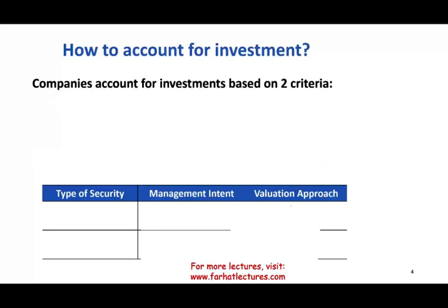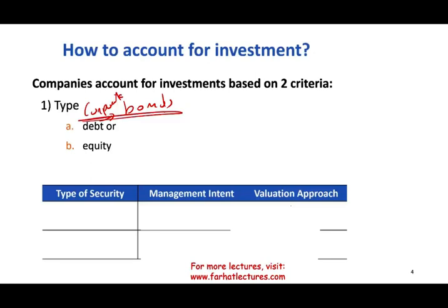How to account for investments depends on two basic criteria. First, the type of the investment you are dealing with — the type could be debt or it could be equity. When we discuss debt in this series of lectures, I'm going to be referring to bonds, specifically corporate bonds, though that is not the only form of debt. Many companies invest the majority of their money in U.S. treasury bonds or treasury bills. So it's either debt, which is bonds, or equity, which we'll assume to be stocks.